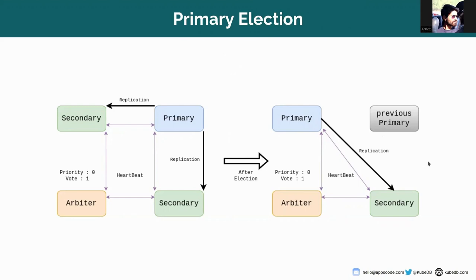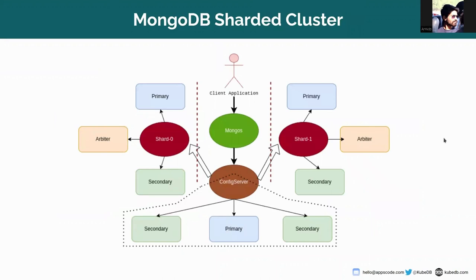If we add an arbiter, this gives an uneven number of voting members without the overhead of an additional member that replicates data. In a MongoDB sharded cluster, each shard is actually one replica set structure, and in this sharded cluster, you can use an arbiter too.